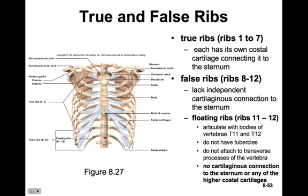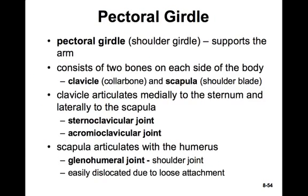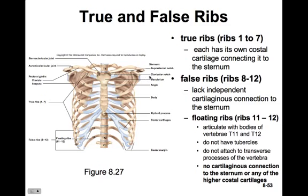We have a sternal end and an acromial end. The scapula will also articulate with the humerus. The joint there is called the glenohumeral joint — that's the shoulder joint. It's a ball and socket joint, and it dislocates pretty easily due to its loose attachment. The humerus articulates right in this socket, and as you can see, there's not much there to hold the ball of the humerus in place.